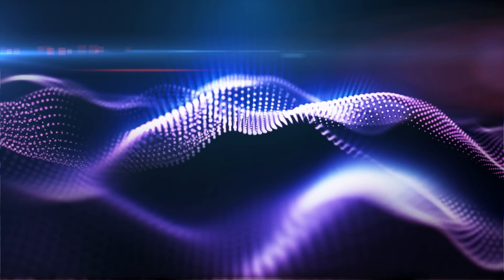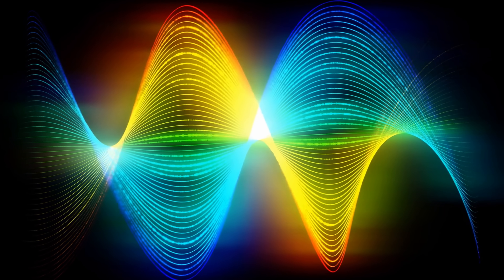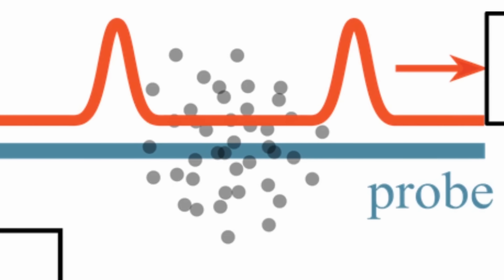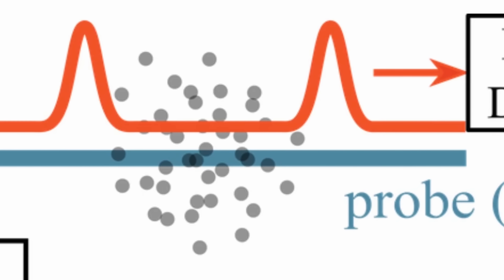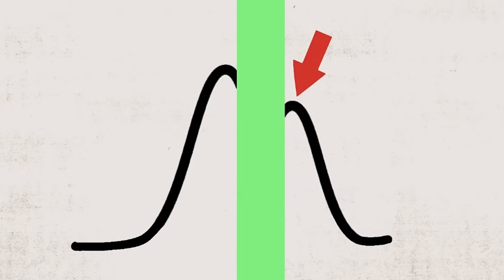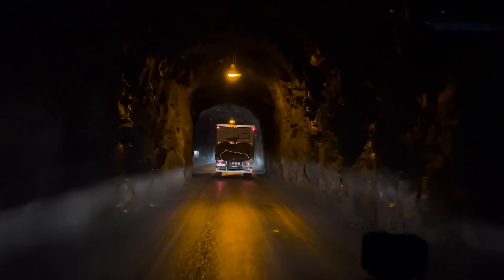It helps to imagine the light packet as similar to a wave in the ocean — it's the peak of that wave that defines the arrival time, or in more scientific terms, the group delay. But for certain materials, especially when light is tuned extremely close to the atomic resonance, scientists noticed something seemingly impossible: the pulse's peak appeared to emerge from the material before the entire pulse had even entered.